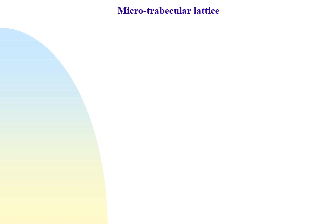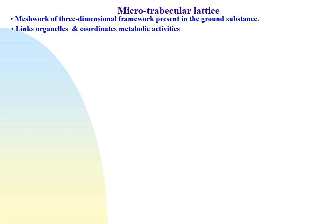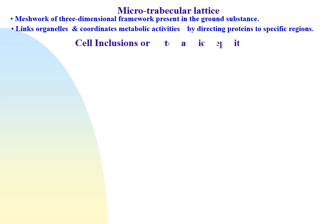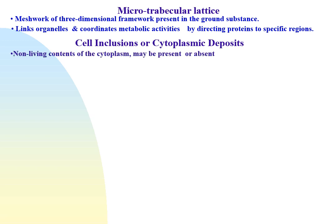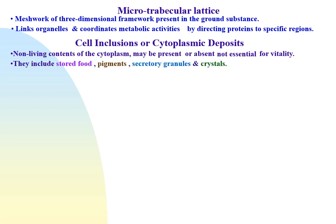The microtrabecular lattice is a meshwork of three-dimensional framework present in the ground substance, which links organelles and coordinates the metabolic activities of the cell by directing proteins to their specific regions. Cell inclusions or cytoplasmic deposits are non-living contents of the cytoplasm which may be present or absent and are not essential for the vitality of the cell. They include stored food, pigments, secretory granules, and crystals.